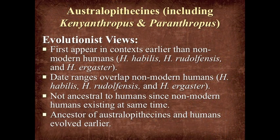The title of this lecture is 'Australopithecines and Humans: Differences, Evolutionary Assumptions, and Creationist Beliefs.' When I say australopithecines, I'm talking about a broader range of animals called australopithecines, Kenyanthropus, and Paranthropus. Some of these specimens were previously referred to as Australopithecus but have since been reclassified under the other names.